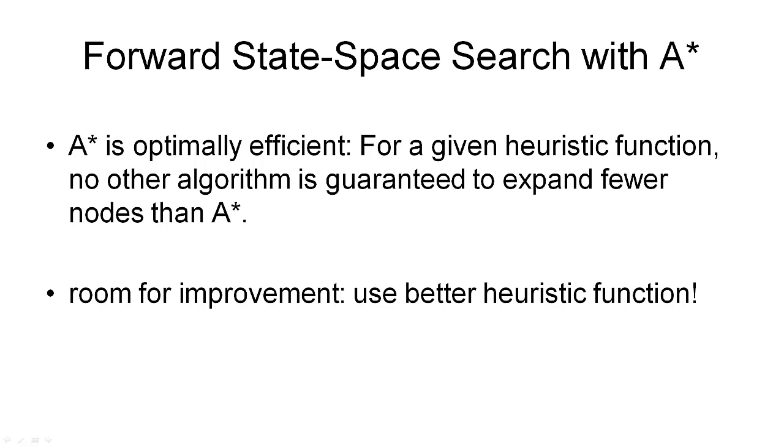Here is a quick recap of one of the things we've already learned about A star, namely that A star is optimally efficient. This means that for a given heuristic function, no other algorithm is guaranteed to expand fewer nodes than A star. This means that if we are given a heuristic function and that function is fixed, we cannot change it, and we insist on having a minimal length solution plan, then there cannot be an algorithm better than A star that we can use for search. But there are a few caveats. For example, the guarantee that A star returns a minimal length solution relies on the fact that the given heuristic is admissible.